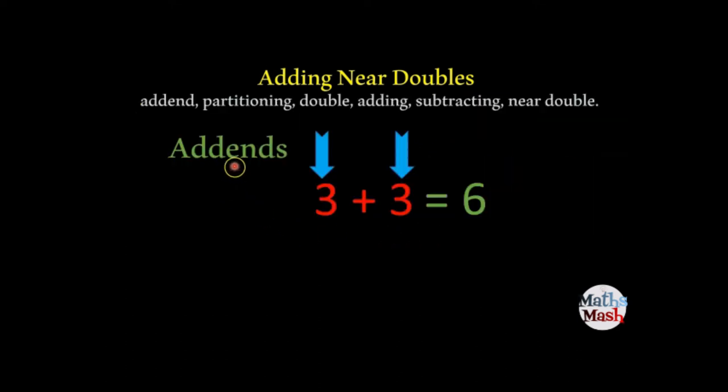Okay, so the first thing we need to make sure you understand is what are addends. Addends are basically the numbers you're adding together. So here I've got an example of 3 plus 3. So 3 and 3 here, these are both addends and when you combine them they give you the answer of 6.